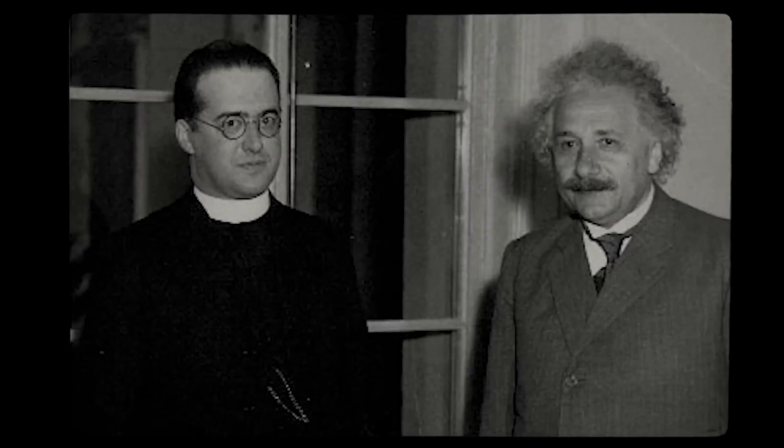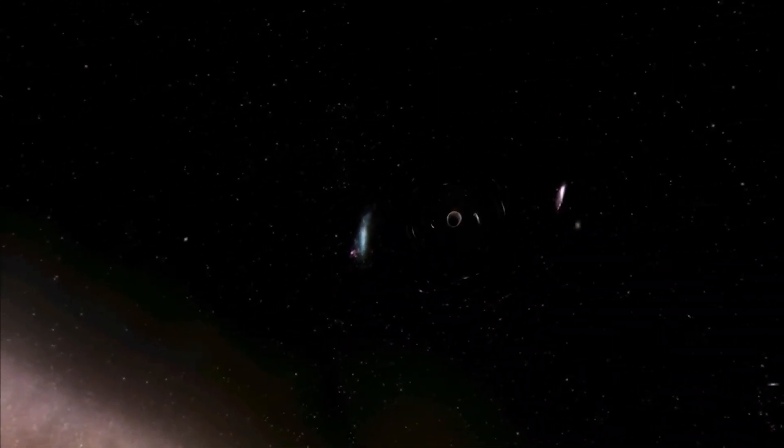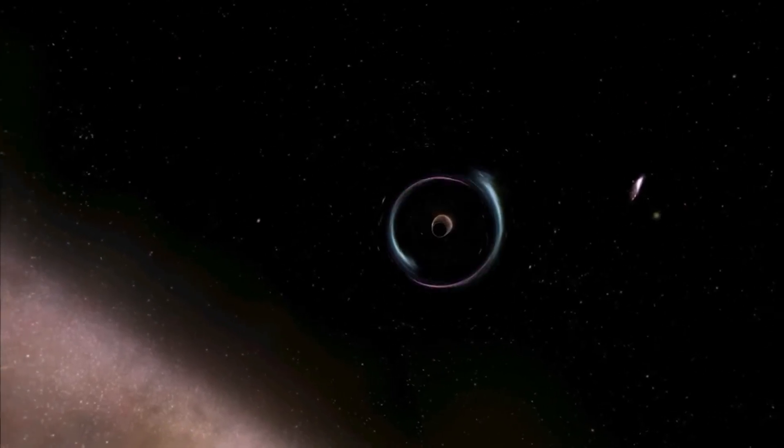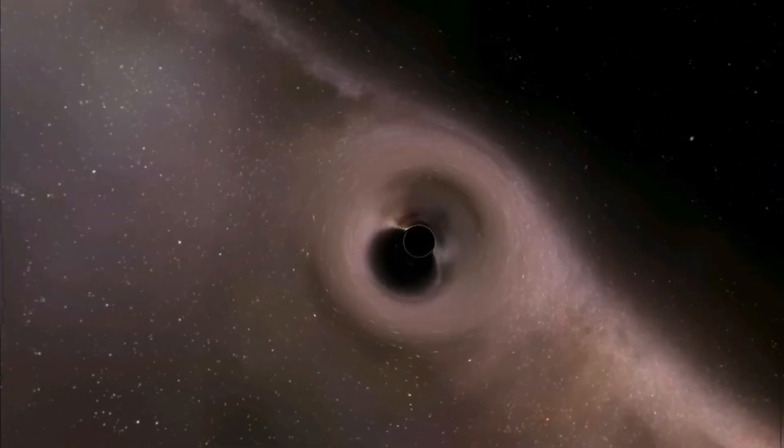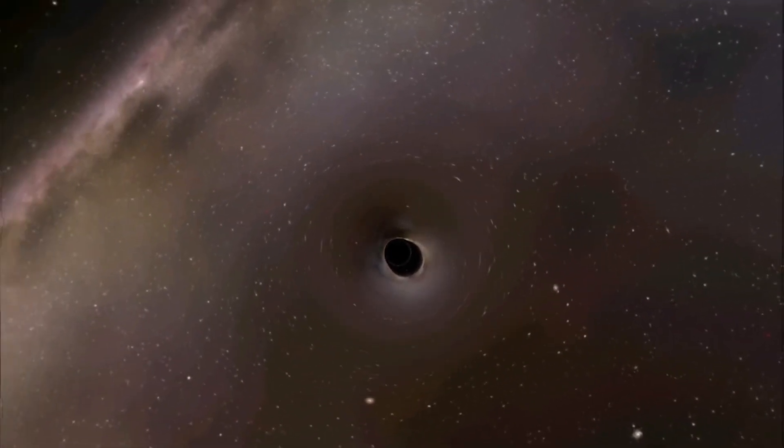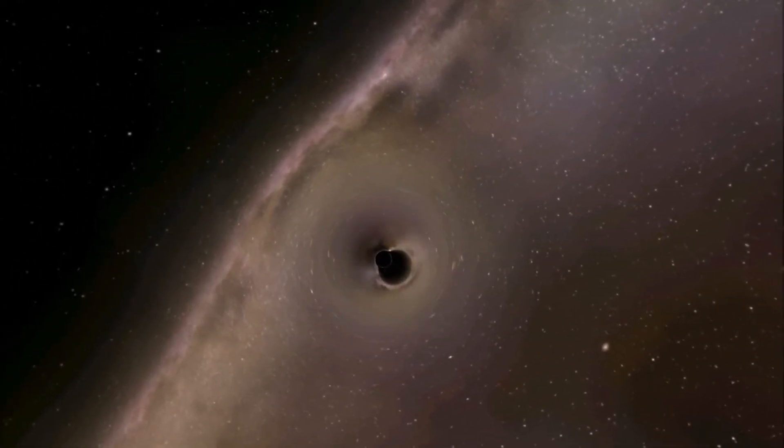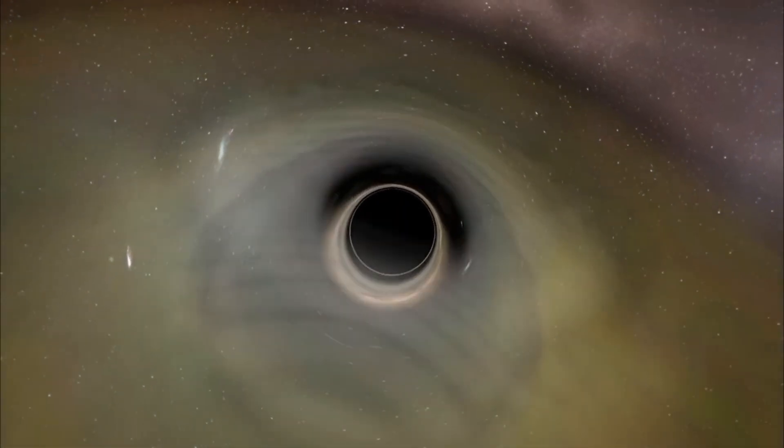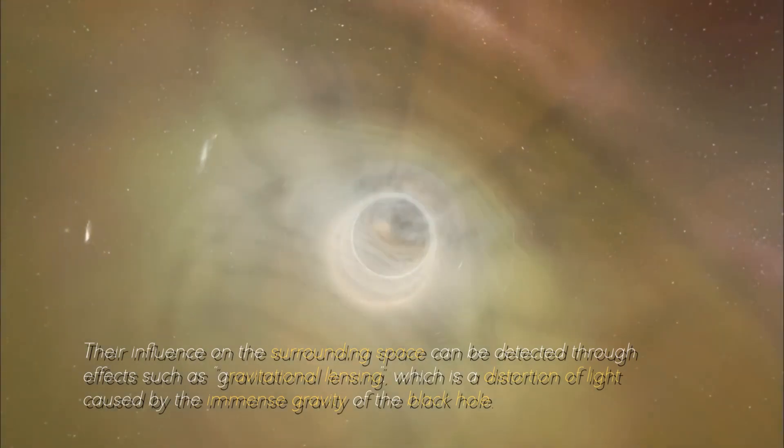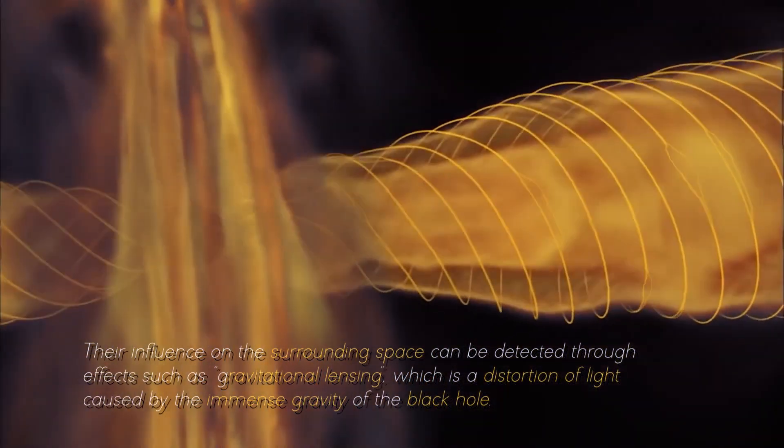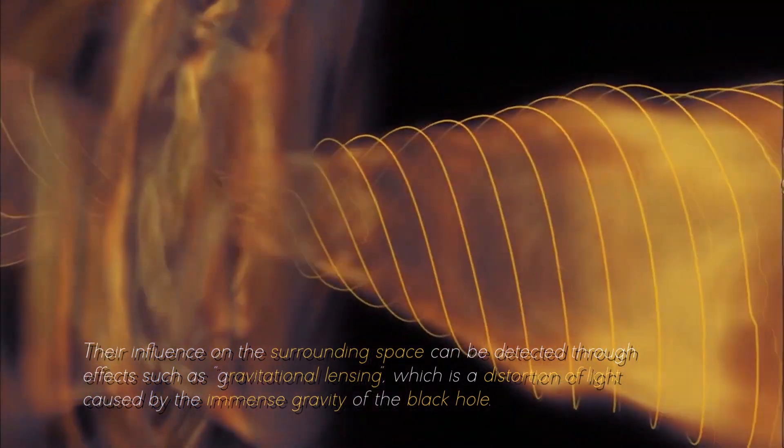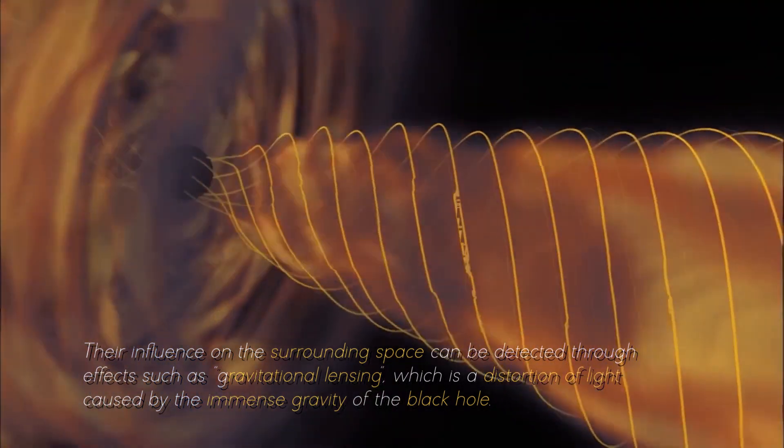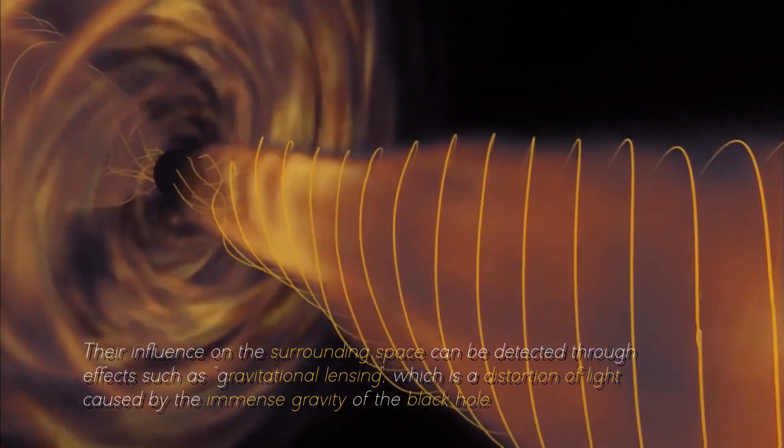The event horizon is not a solid physical surface like the crust of a celestial object, but represents a mathematical boundary beyond which the structure of space and time behaves in a way that defies our intuition. The presence of an event horizon around black holes is what makes their direct study difficult, but this does not mean that it is completely impossible. Their influence on the surrounding space can be detected through effects such as gravitational lensing, which is a distortion of light caused by the immense gravity of the black hole.